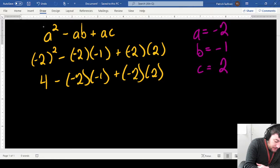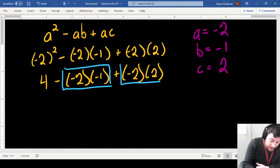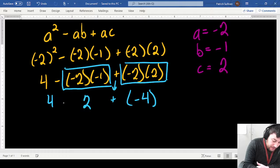Now at this part, I'm going to again kind of break it down into smaller portions. This part right here, negative 2 times negative 1, that gives me positive 2. Negative 2 times positive 2, that gives me negative 4.